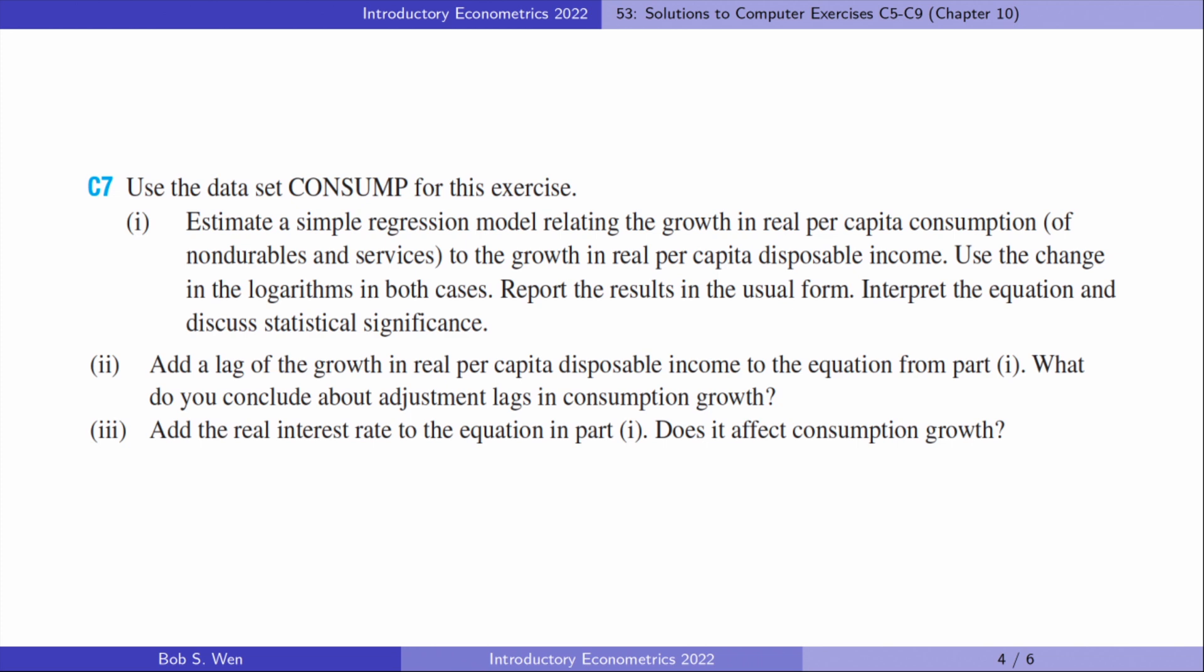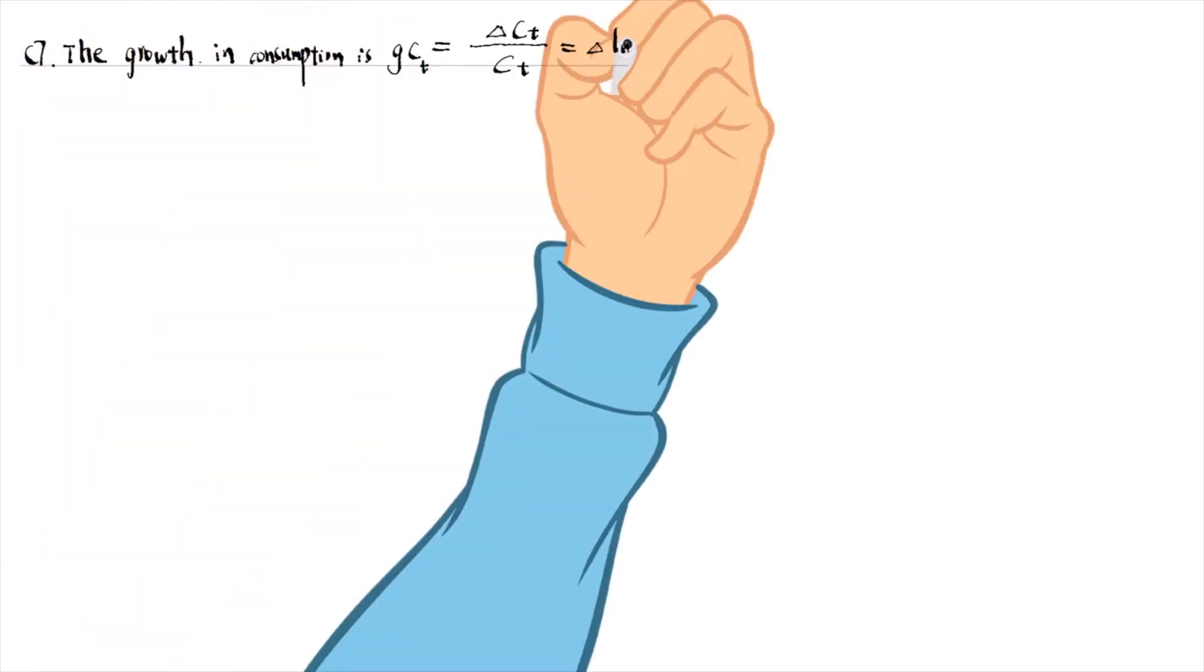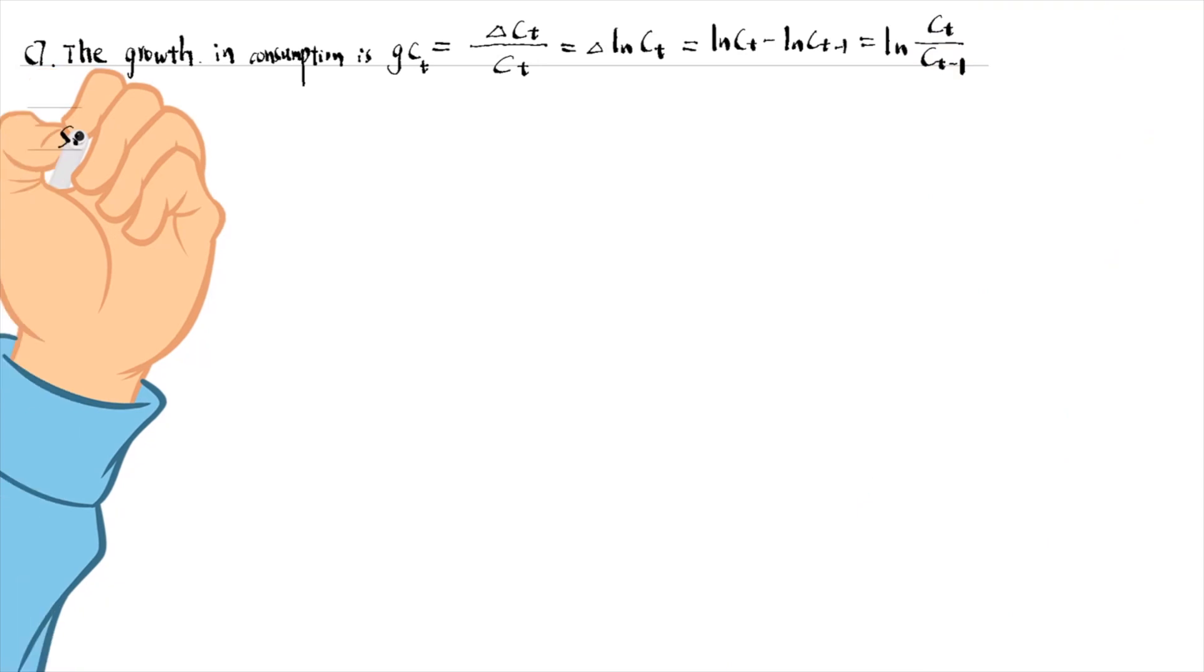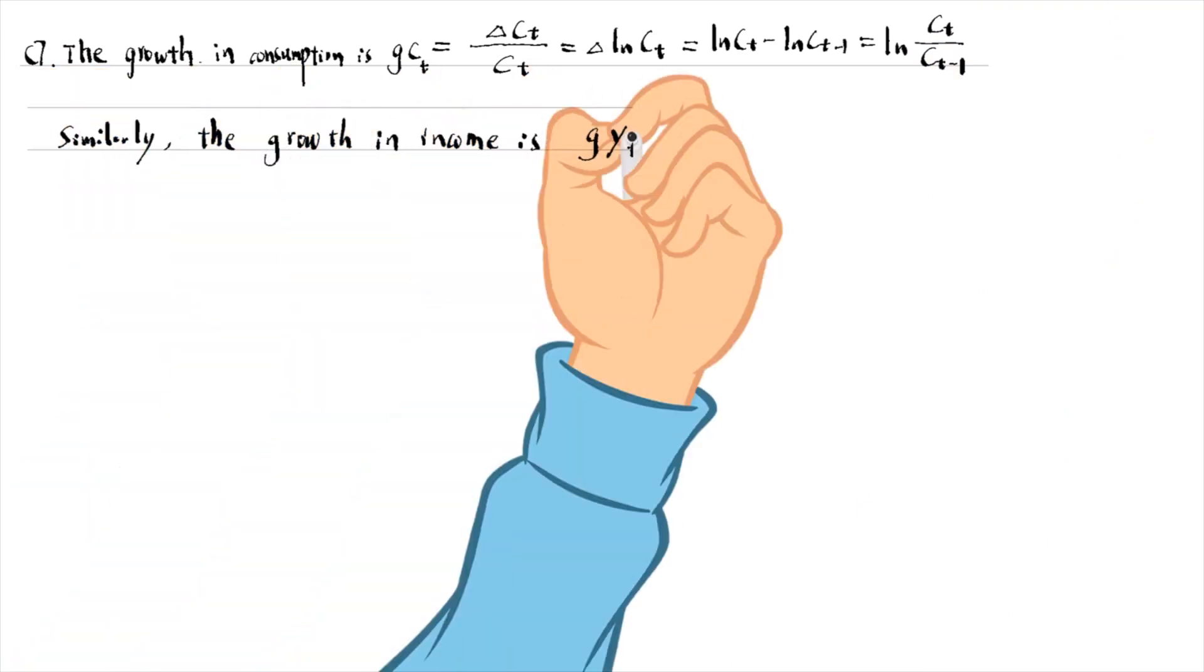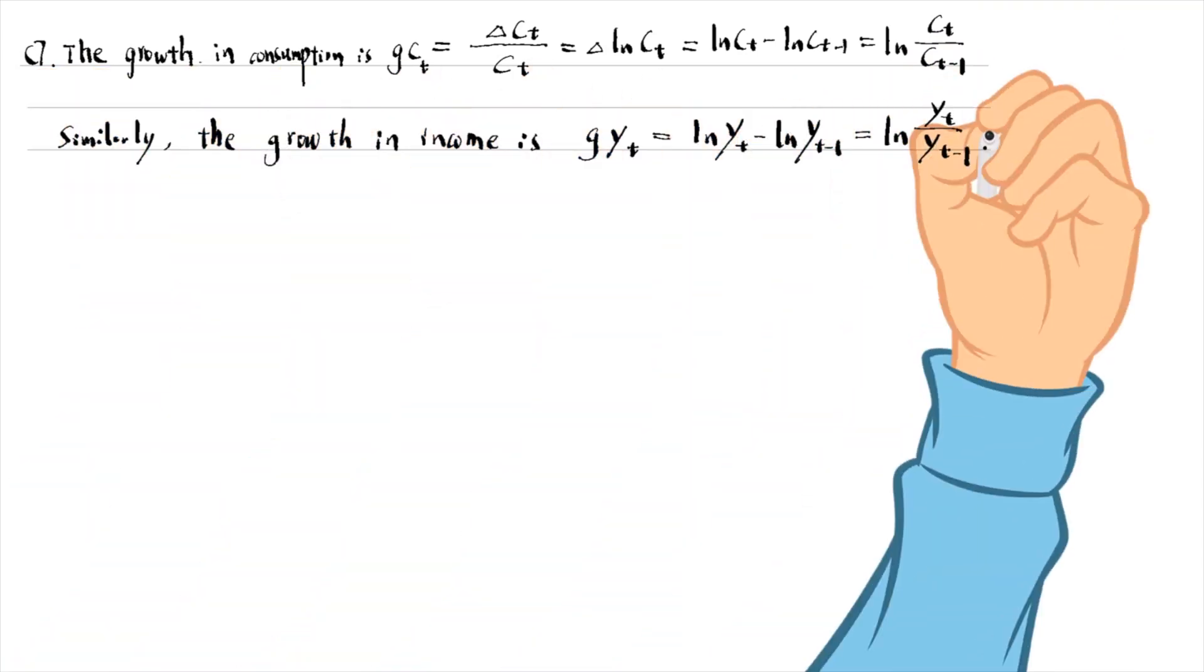Let's find answers to computer exercise 7. In part 1, we estimate a simple regression model relating the growth in real per capita consumption to the growth in real per capita disposable income.